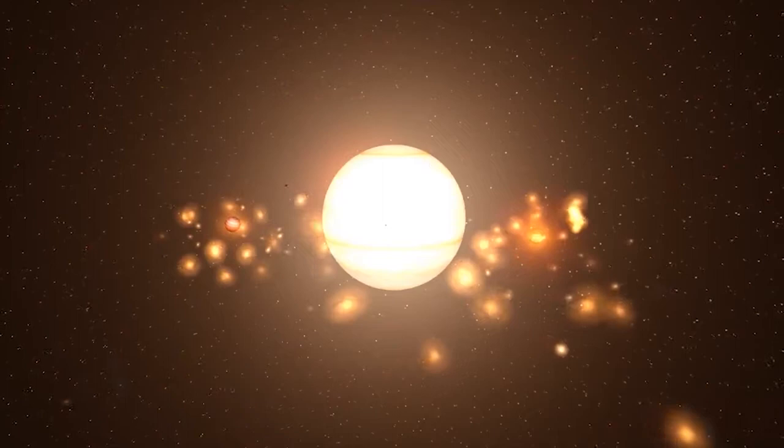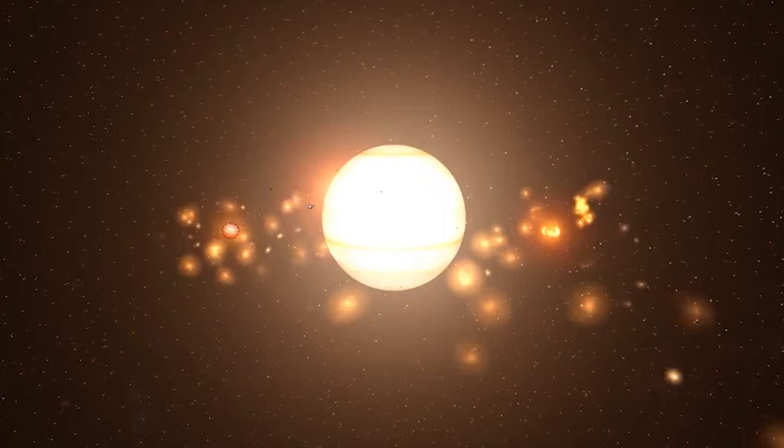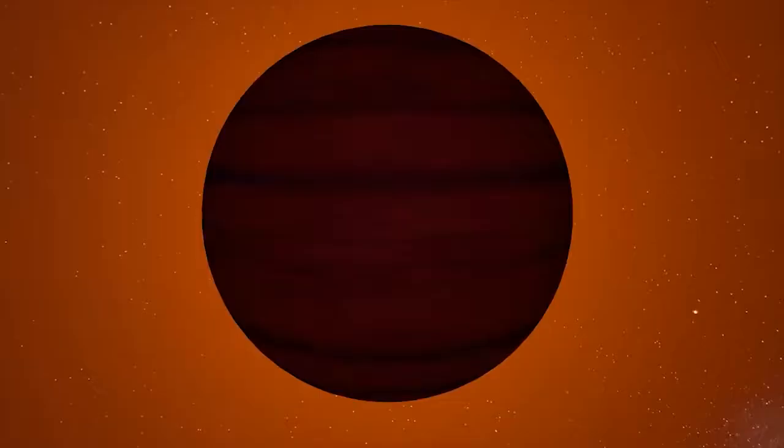Some stars can actually fail here if they do not collect enough mass so the fusion process can begin. This results in a brown dwarf star. Brown dwarfs are usually in size between a giant gas planet like Jupiter and the smallest sizes of stars. They are basically stars that did not collect enough mass to begin the fusion process.